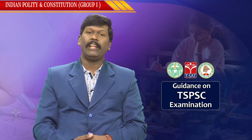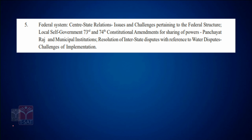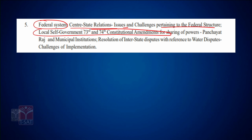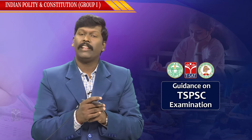Chapter 5 consists of a very elaborated syllabus. It deals with the federal system, that is centre-state relations, issues, and challenges pertaining to federal structure. The local self-governance, 73rd and 74th Amendment Act — very important for the exam — and also Panchayati Raj institutions, municipalities, and resolutions to interstate disputes with reference to water disputes, challenges and implementation. Legislative, administrative, and financial relations between centre and state, as well as Panchayati Raj institutions and municipalities, are covered in this chapter.